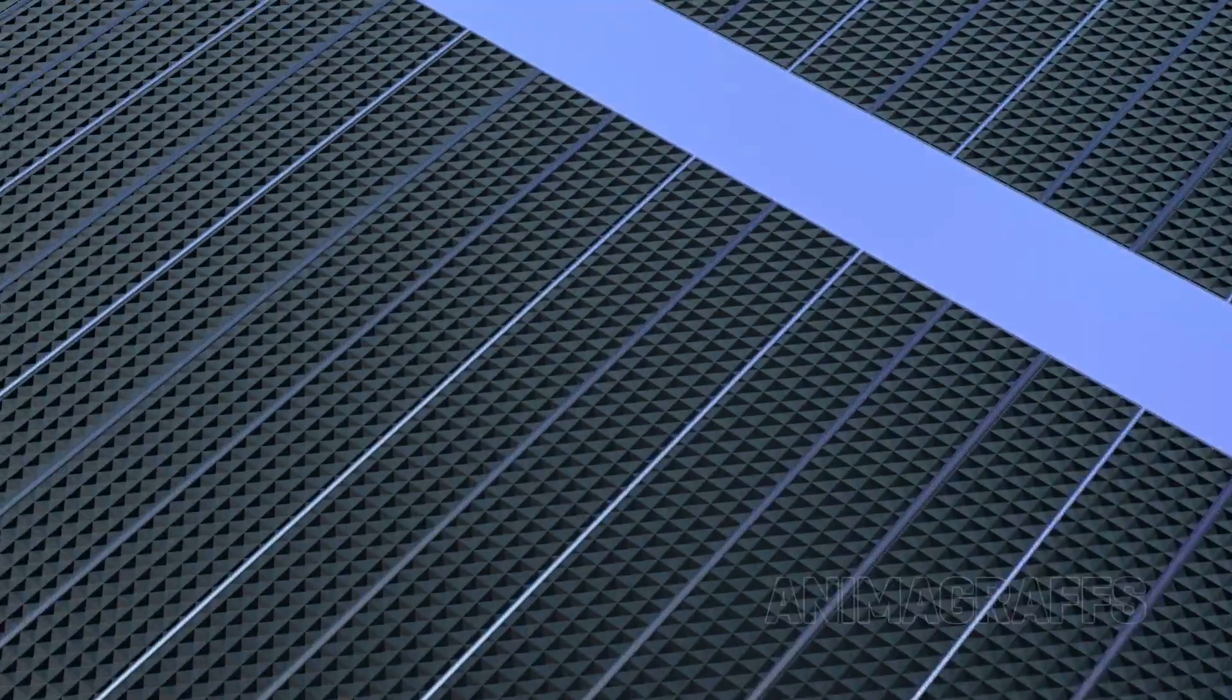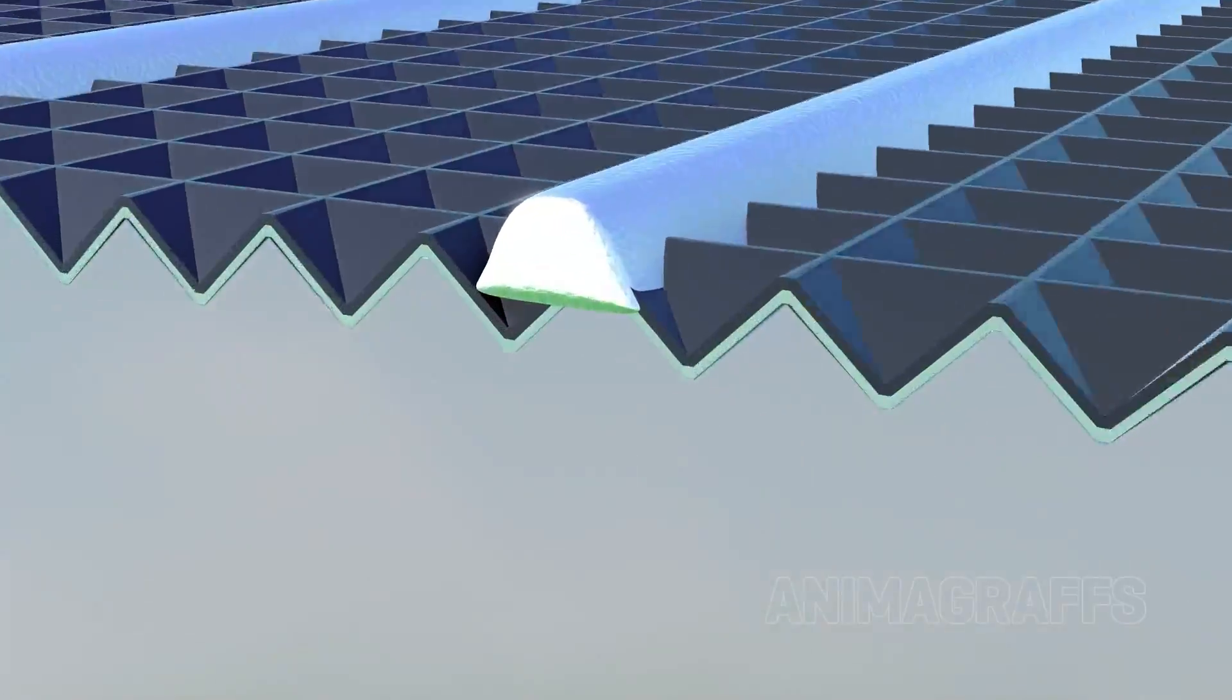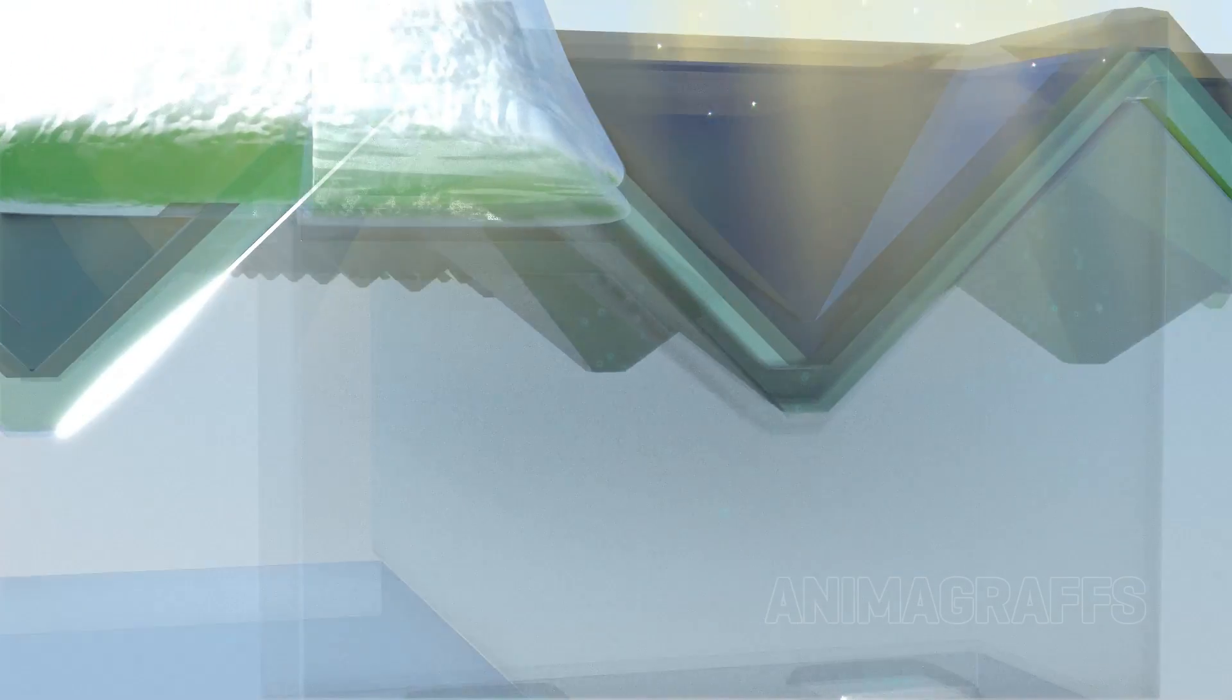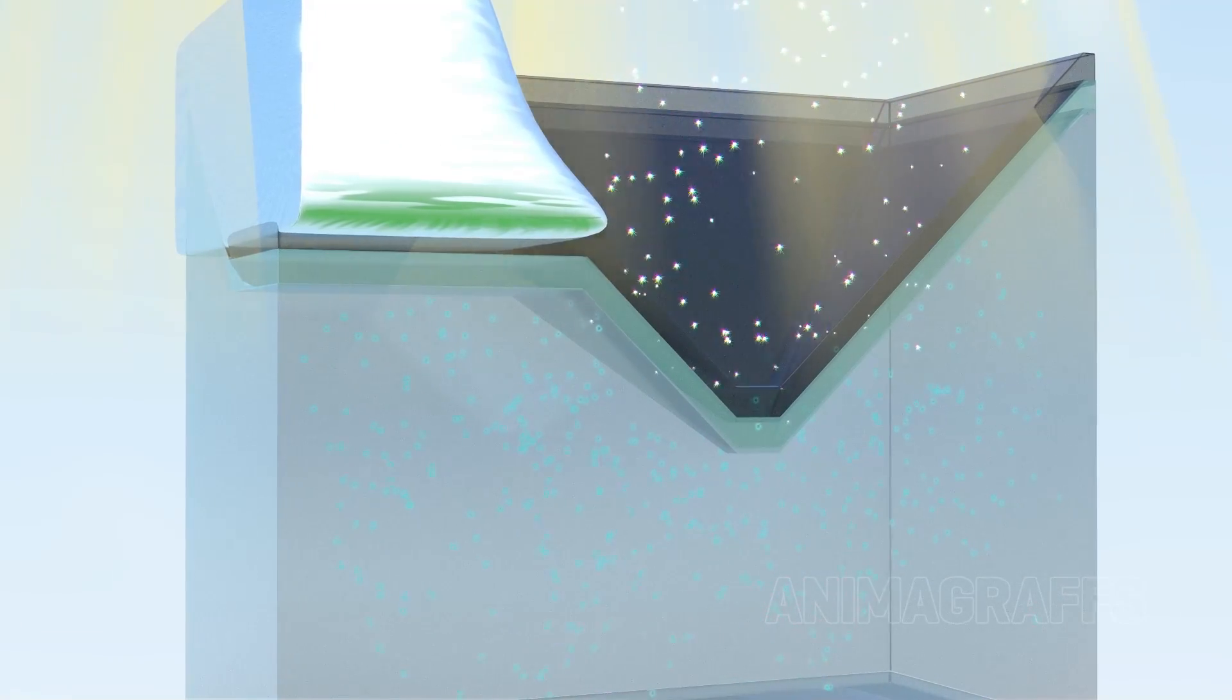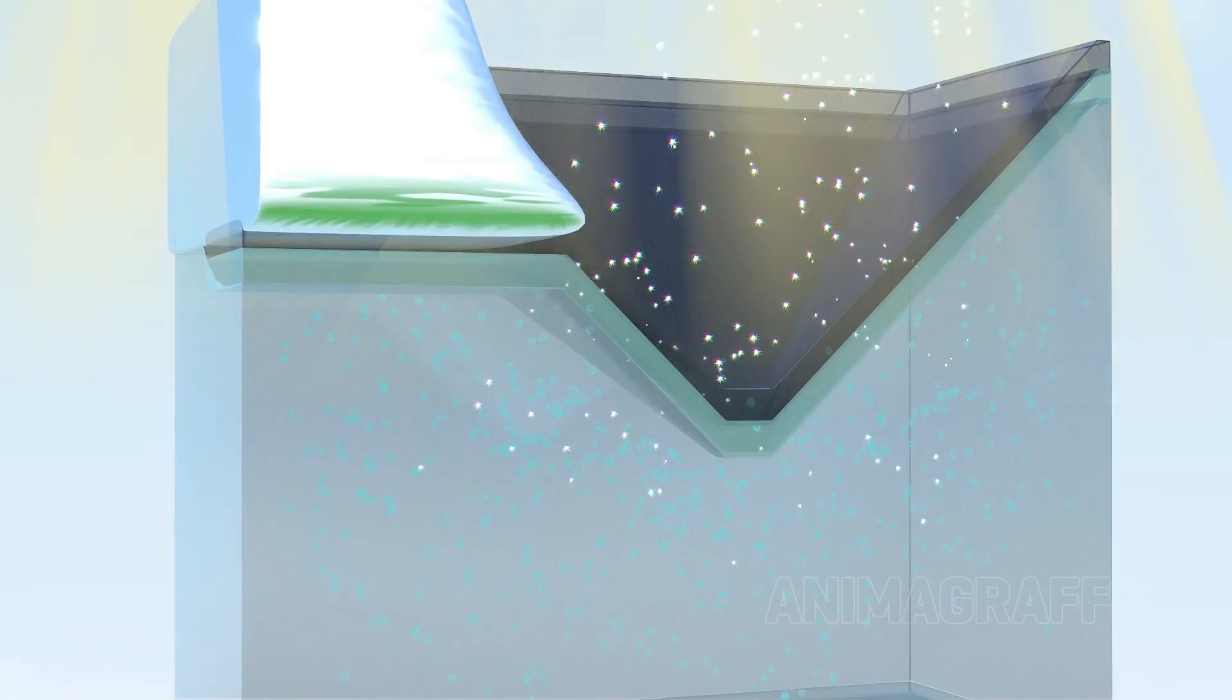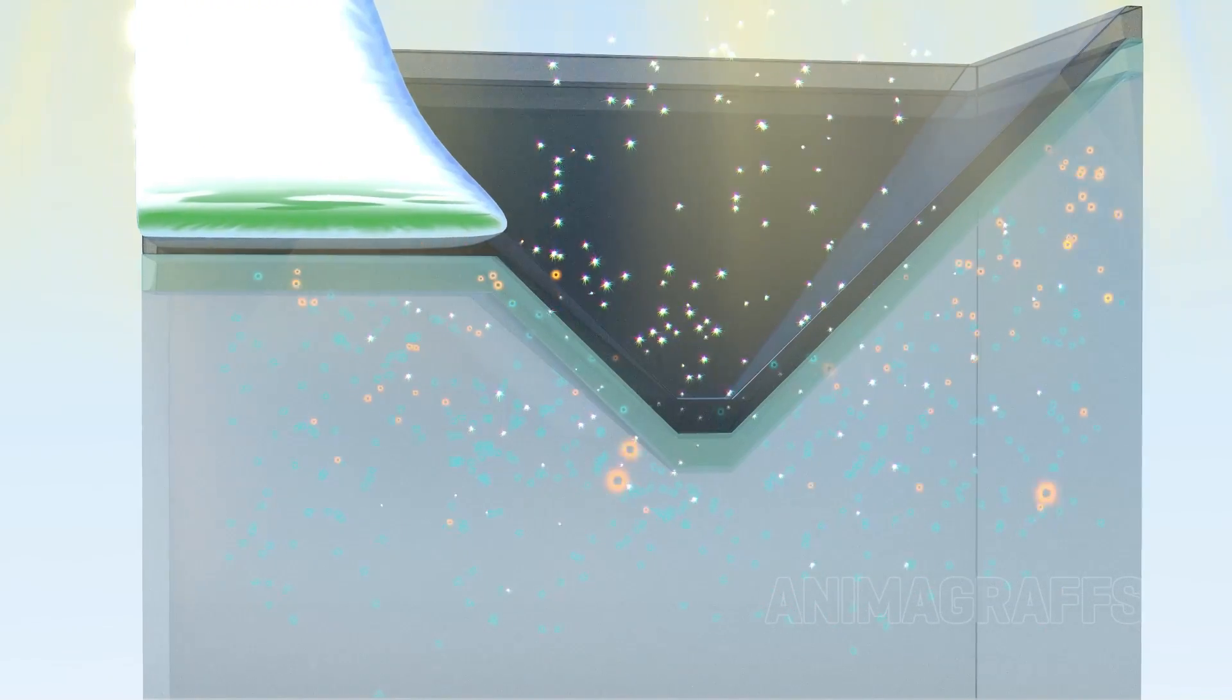Let's start in the heart of a single solar cell. Particles of light, which we call photons, enter the solar cell and are absorbed by available electrons, exciting the electrons to a higher energy level.